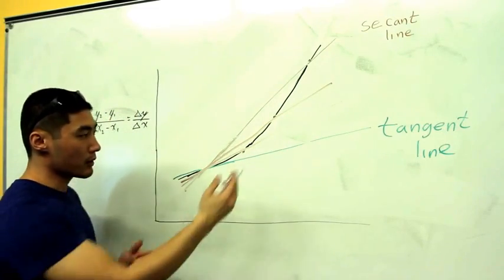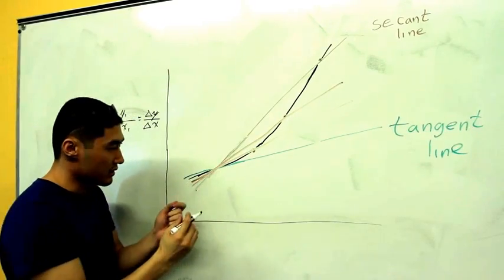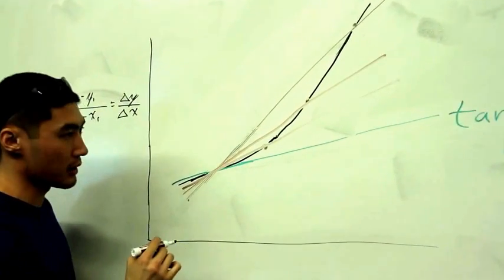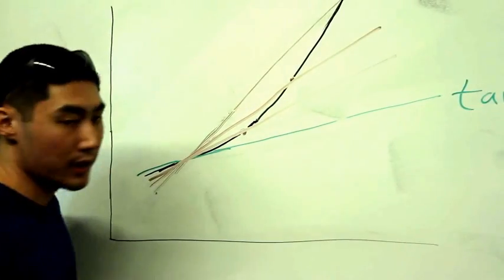Now, if I were to bring this point closer and closer, just to a point where it's barely touching each other, I will find that the secant line equals the tangent line.